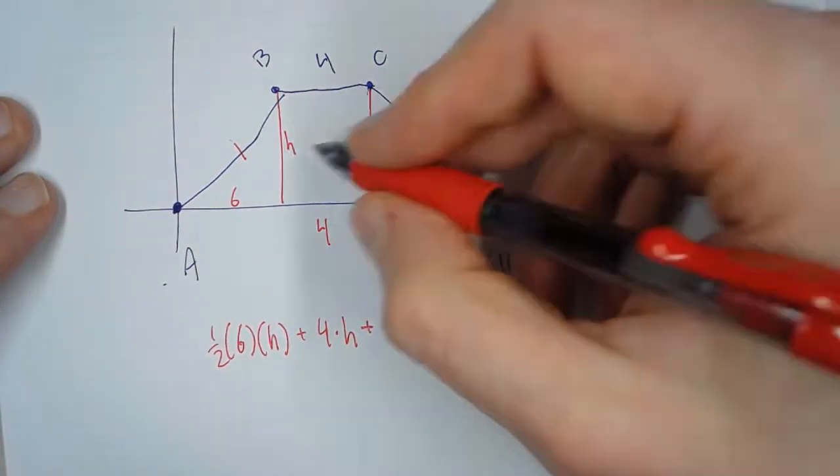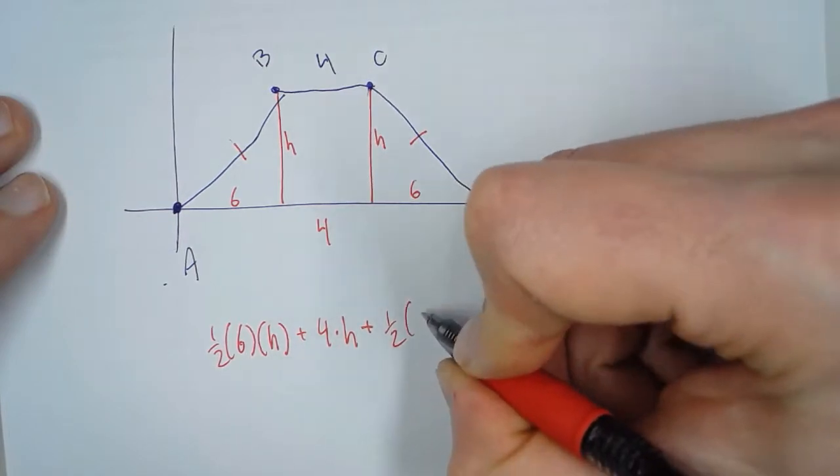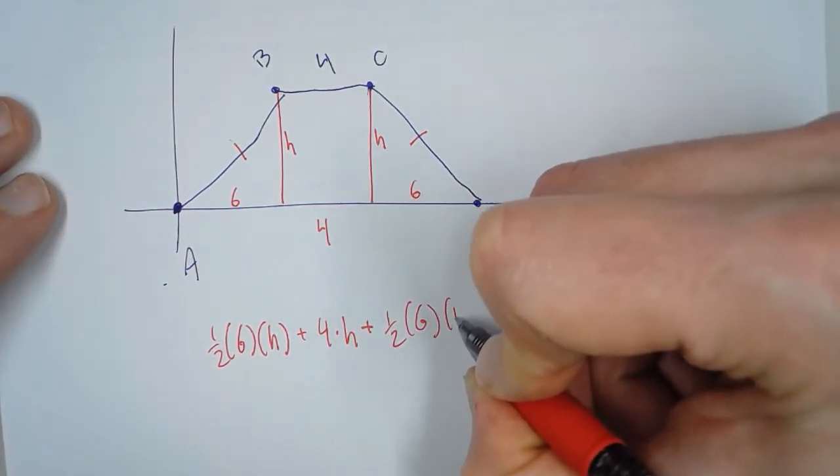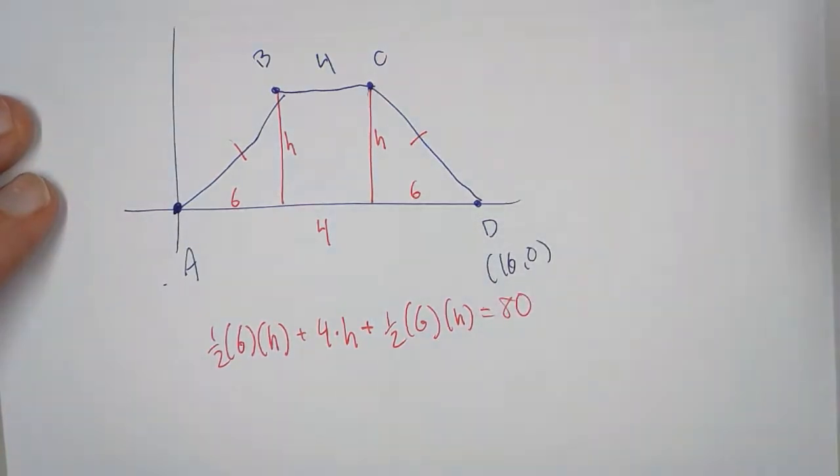Over here, same thing as over here. I take 1/2 the base, which is 6, times the height, which is H. Now, all of this equals 80.